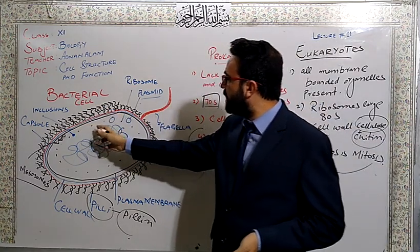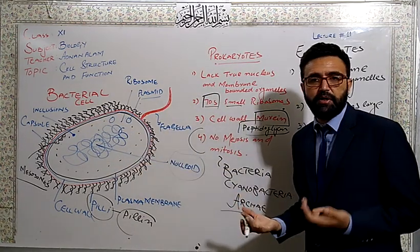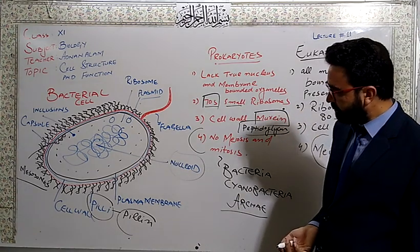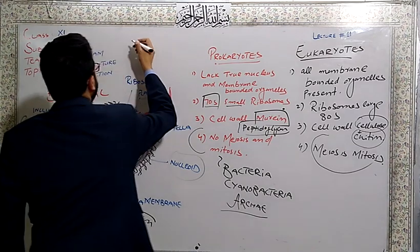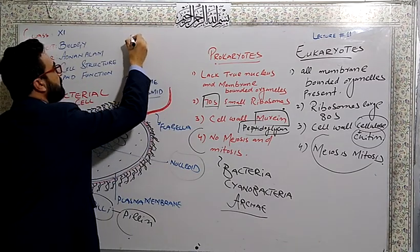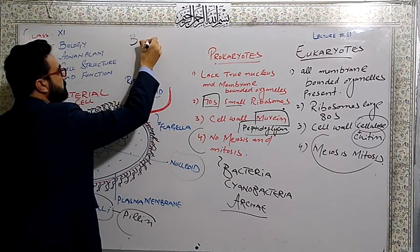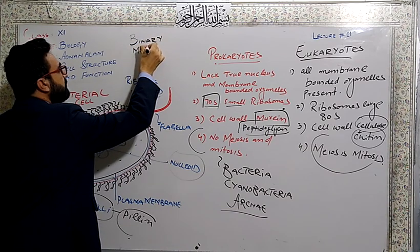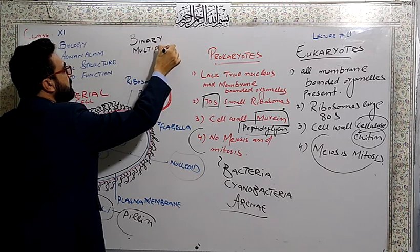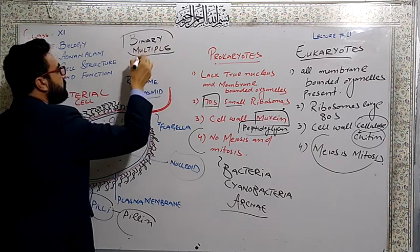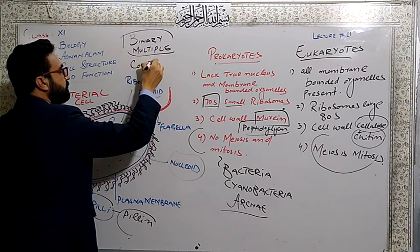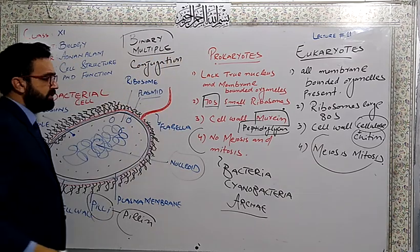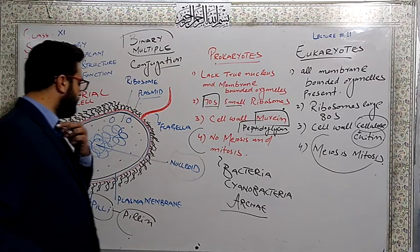There are some antibiotic resistance genes which protect them from the effect of antibiotics. Along with them, different inclusions are present - proteins, carbohydrates, lipids. Bacterial cell division mainly occurs through binary fission and sometimes multiple fission. Along with that, sexual reproduction can occur through conjugation. These are the methods of cell division in bacteria.